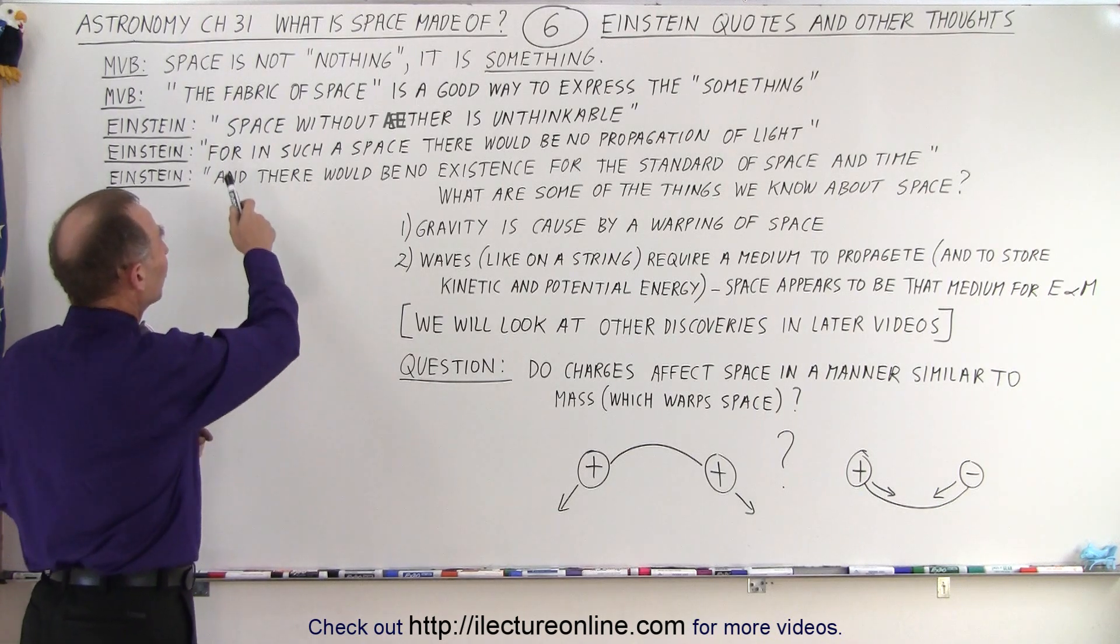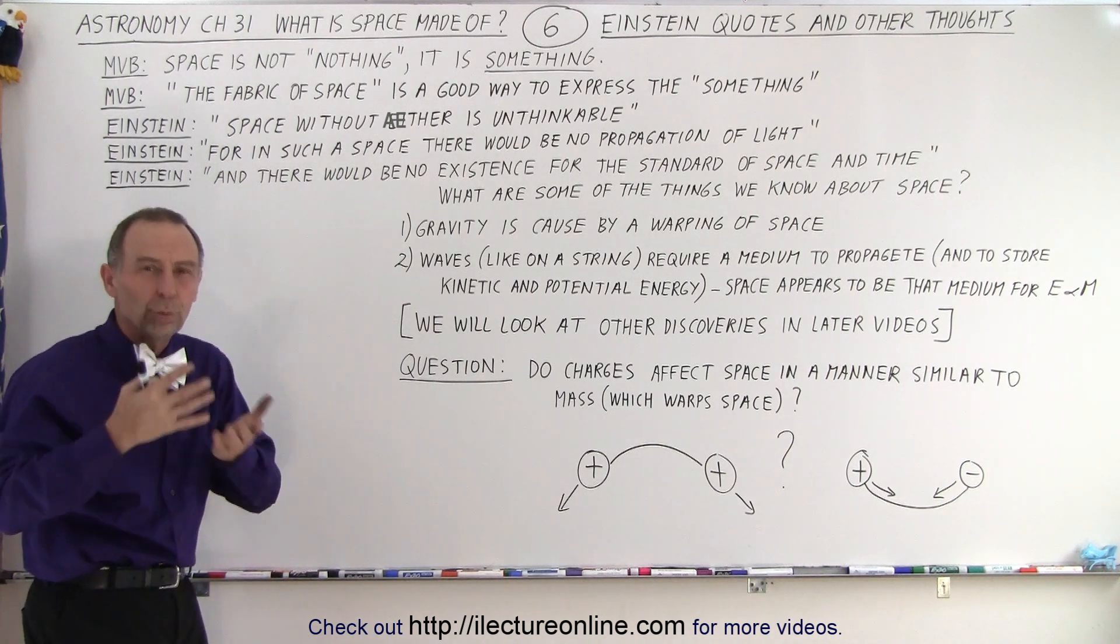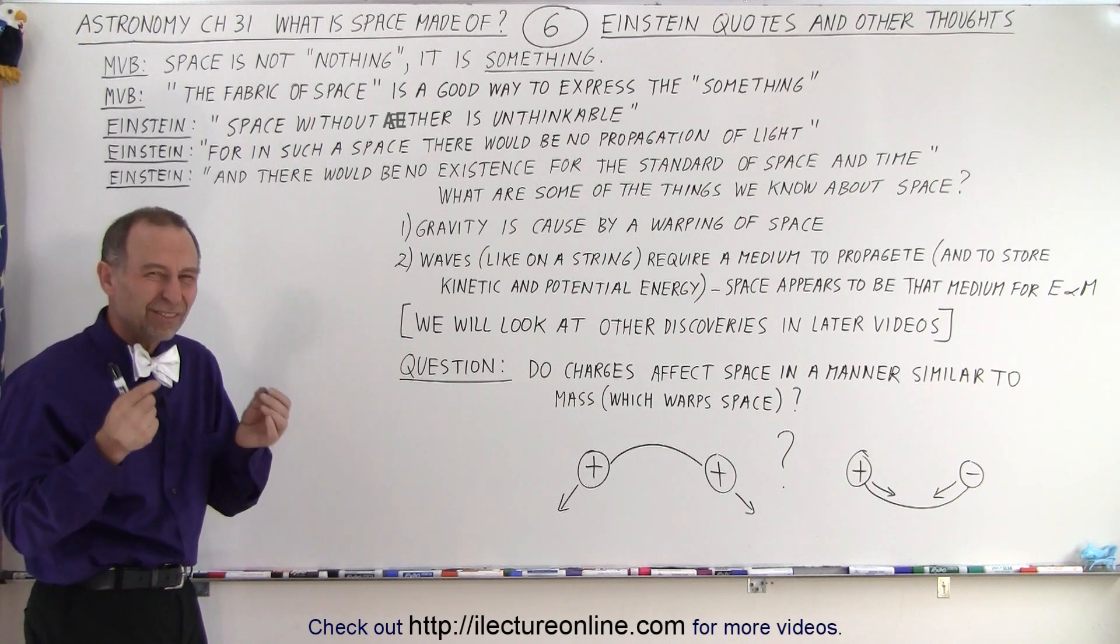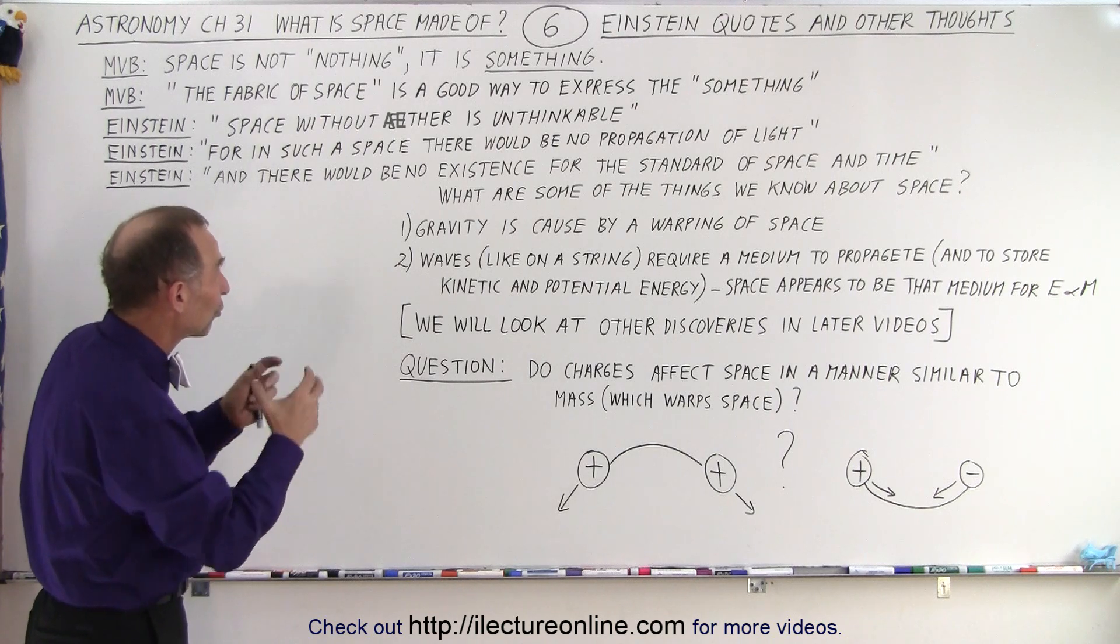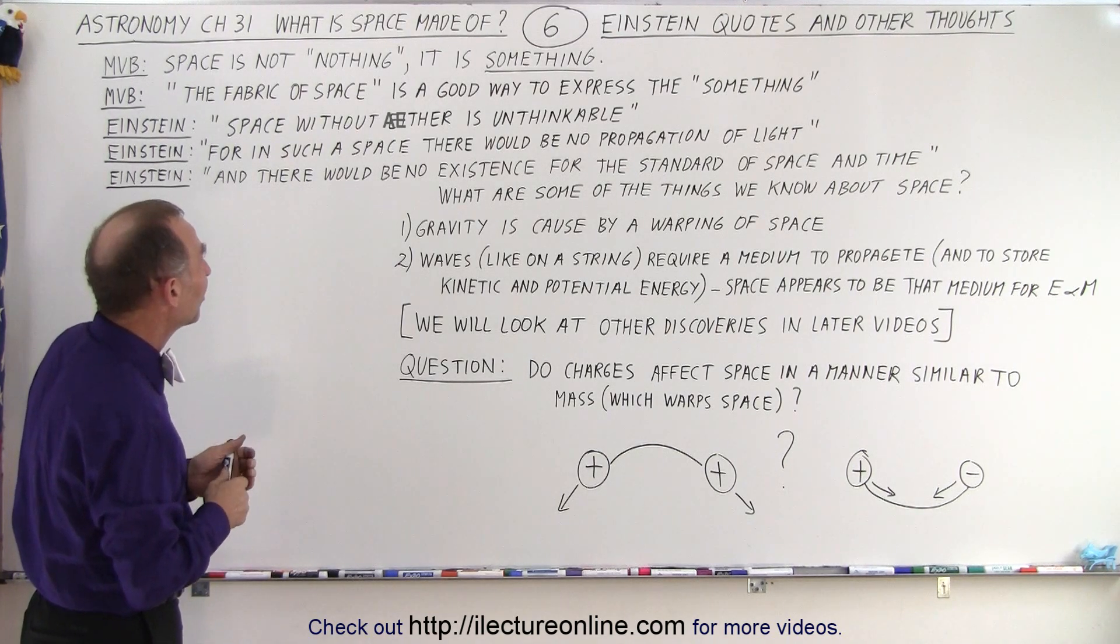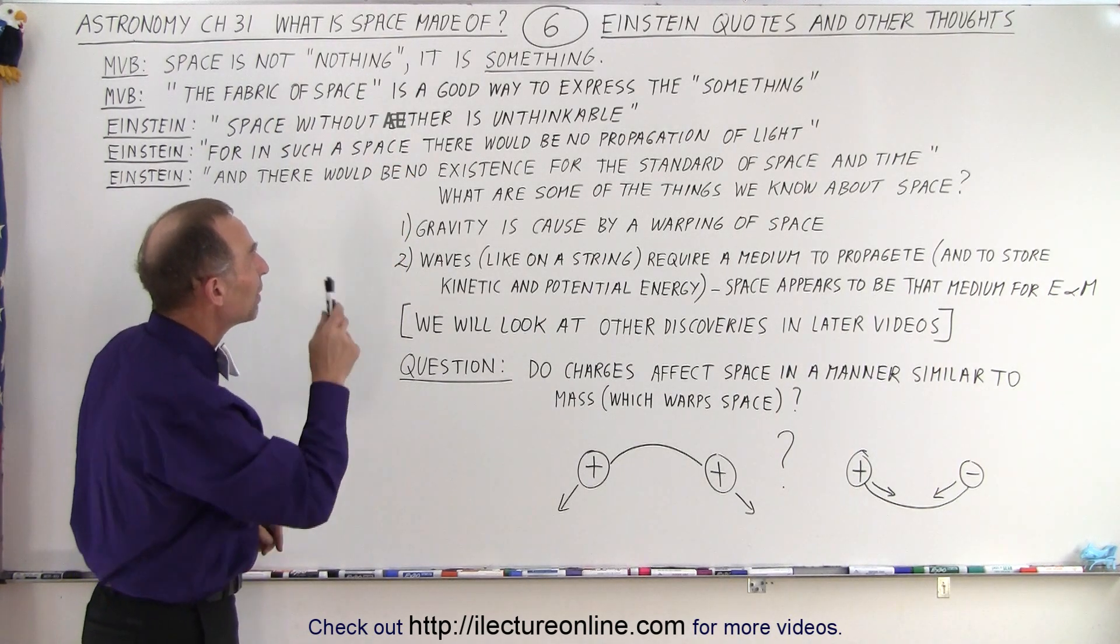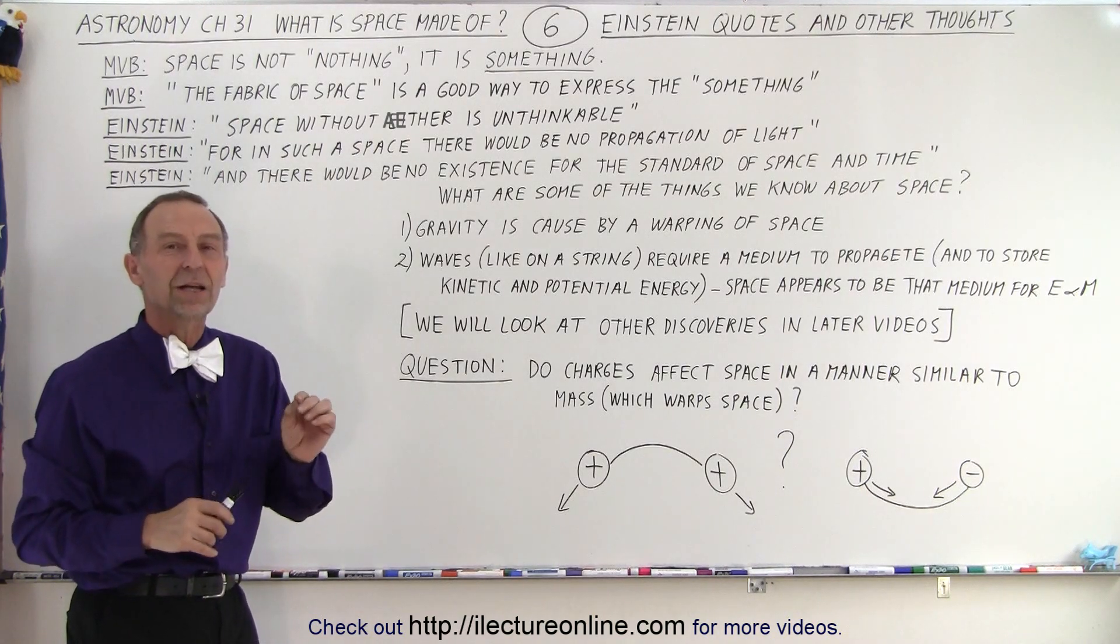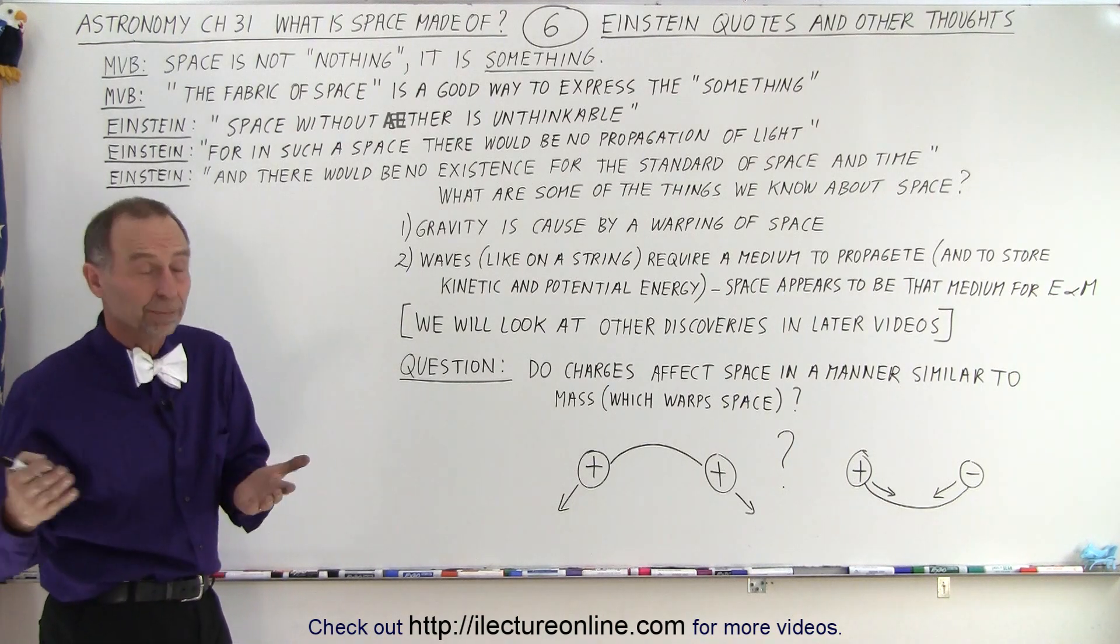He said that for such a space, a space without ether, don't think of it as a fluid because we no longer think of ether as a movable fluid, but it's something that has properties, has certain characteristics that we need to try to define. He said that if that didn't exist, the ether, there would be no propagation of light. So he says there must absolutely be something there to space, some characteristics, some properties, otherwise light could not travel through it.